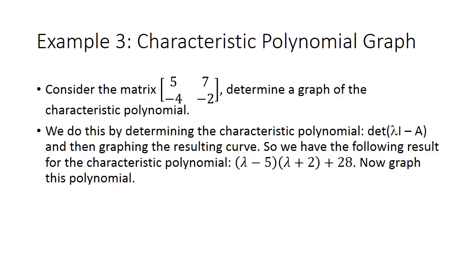In this example, we will graph the characteristic polynomial of the matrix 5, 7, negative 4, negative 2. We'll first generate the characteristic polynomial by taking the determinant of lambda I minus A, which results in lambda minus 5 times lambda plus 2, plus 28. We will graph this polynomial.